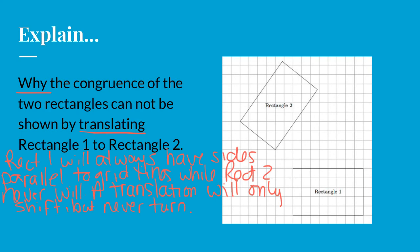Here's what I was thinking. If you look at rectangle one, the sides of rectangle one will always be parallel to the grid lines, while rectangle two never will have that. And so a translation is only going to shift it. It's never going to turn it. And so a pure translation will never map rectangle one onto rectangle two.